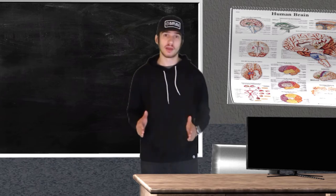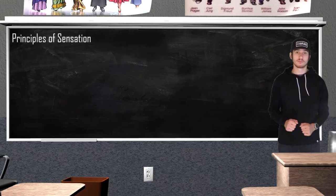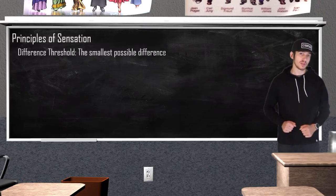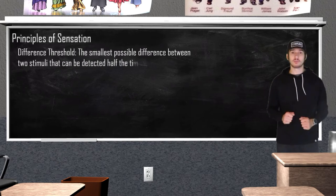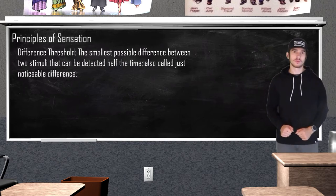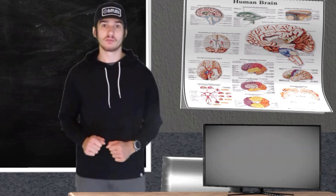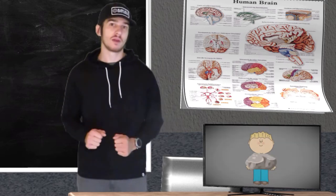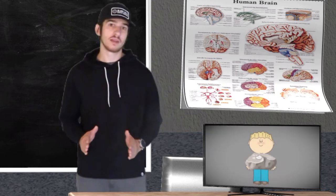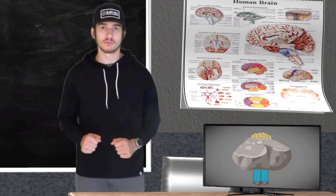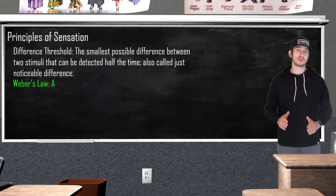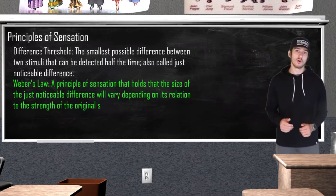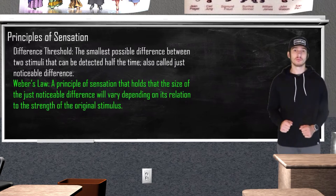What happens when we compare a change in two stimuli? That is where the concept of difference threshold comes in. The difference threshold is the smallest possible change that we can detect between two stimuli 50% of the time. The difference threshold is also referred to as the just noticeable difference, or JND. A simple example: imagine you are holding a rock that weighs 5 pounds. If I place a half-pound rock on top, chances are you will notice a slight change in weight. Now imagine you are holding a 50-pound rock and I place that same half-pound rock on top — chances are you won't notice much of a change.